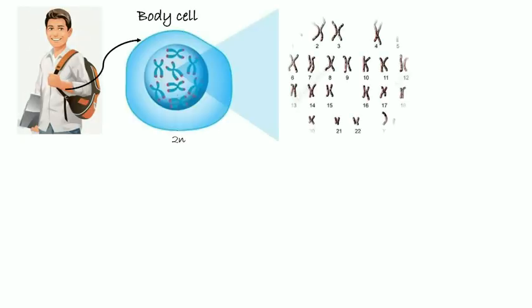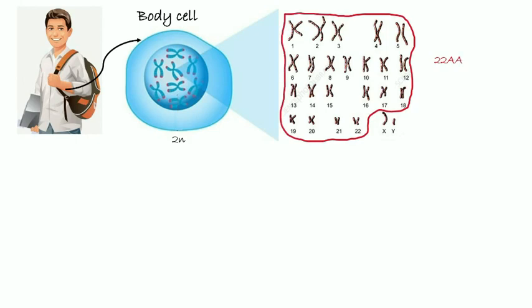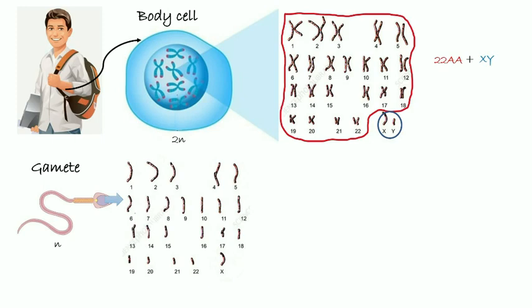Male body cell is diploid cell because it contains 23 pairs of chromosomes. We write the chromosomes as 22AA, meaning 22 pairs of autosomes, plus XY, meaning a pair of gonosome with different size of chromosomes. Male gamete is haploid cell because it contains 23 chromosomes. There are two types of male gametes. The first type is written as 22AA, meaning 22 autosome, plus X, meaning 1 gonosome X.